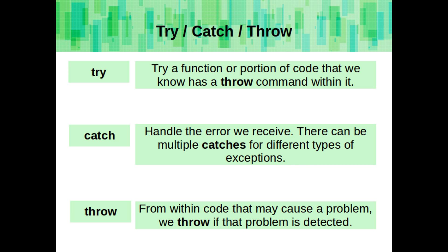So try wraps the function call, or a portion of code that we know has a throw in it. Catch handles the error that we receive, and there can be multiple catches for different types of exceptions. From within the code that may cause a problem, we throw that problem if it's detected.